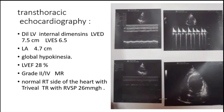Echocardiography showed dilated left ventricular internal dimensions with LV end-diastolic dimension 7.5 cm and LV end-systolic dimension 6.5 cm, and a dilated left atrial dimension of 4.7 cm. The patient has global hypokinesia with a measured LV ejection fraction of 28%. There is grade 2/4 mitral regurgitation, trivial tricuspid regurgitation, and RV systolic pressure of 26 mmHg.